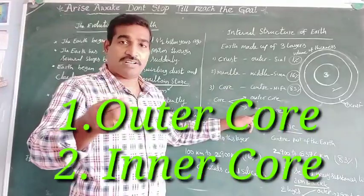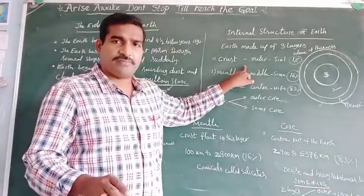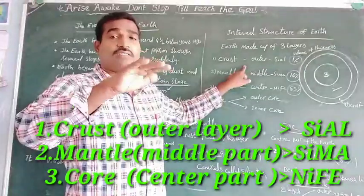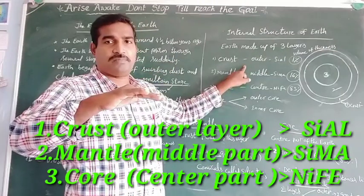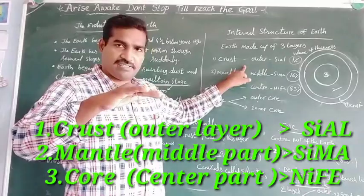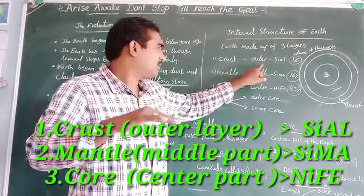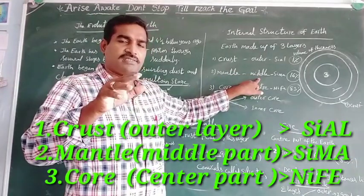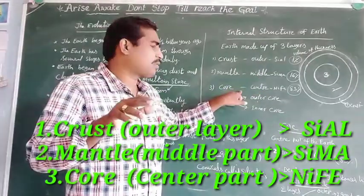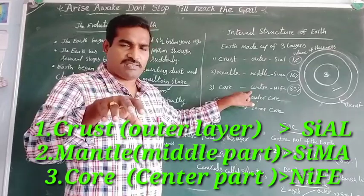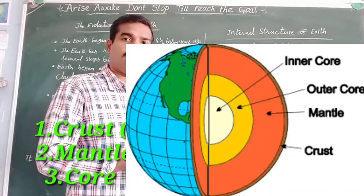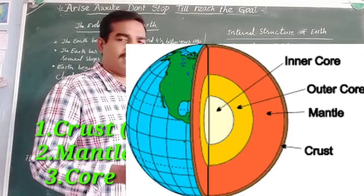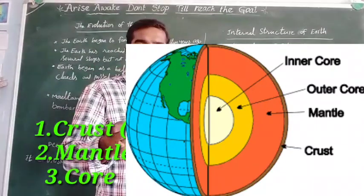So what are these layers? What are the other names of these layers? The first one is the crust, also called the outer layer. We are living on the outer layer — on the crust. The next one is the mantle, which is the middle layer or middle part. And the last one is the core, which is the center part of the Earth.